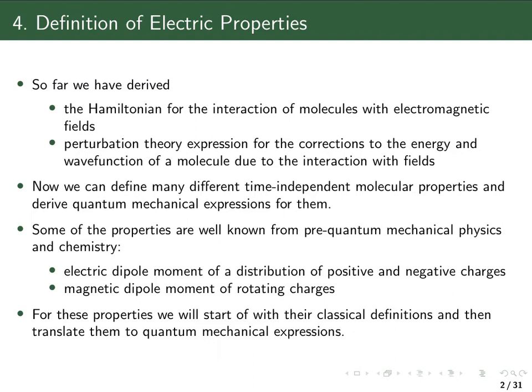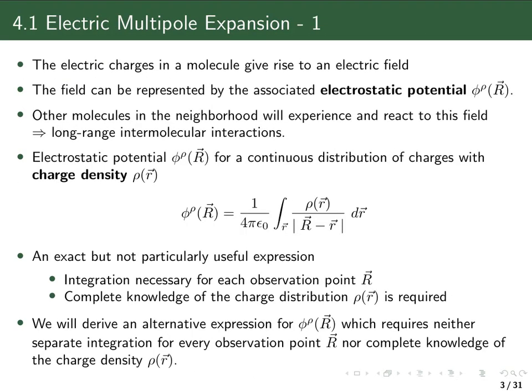For these kinds of properties, we will start with the classical expressions and then translate them into quantum mechanical expressions. But there will also be properties where there is no classical analog, and where we will derive them directly from quantum mechanical expressions. As the first example, let's look at the electrostatic potential outside of a molecule.